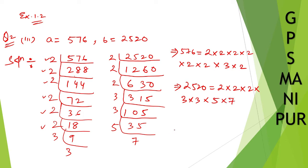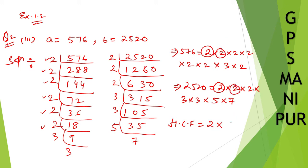Now what we can do — if you look here carefully, we need to find the HCF and LCM. So HCF is equal to — you take only the common ones. 2 is common here, 2 and 2 are common, so write down 2 into. Again 2 and 2 are common, so write down 2. Again 2 and 2 are common, so write down 2.